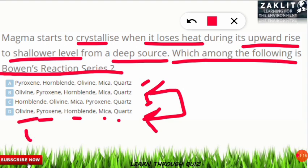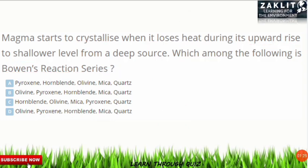You should know the correct sequence: olivine, followed by pyroxene, followed by hornblende, then mica, then quartz. We will learn how to remember this and what Bowen's reaction series is all about in this short video.